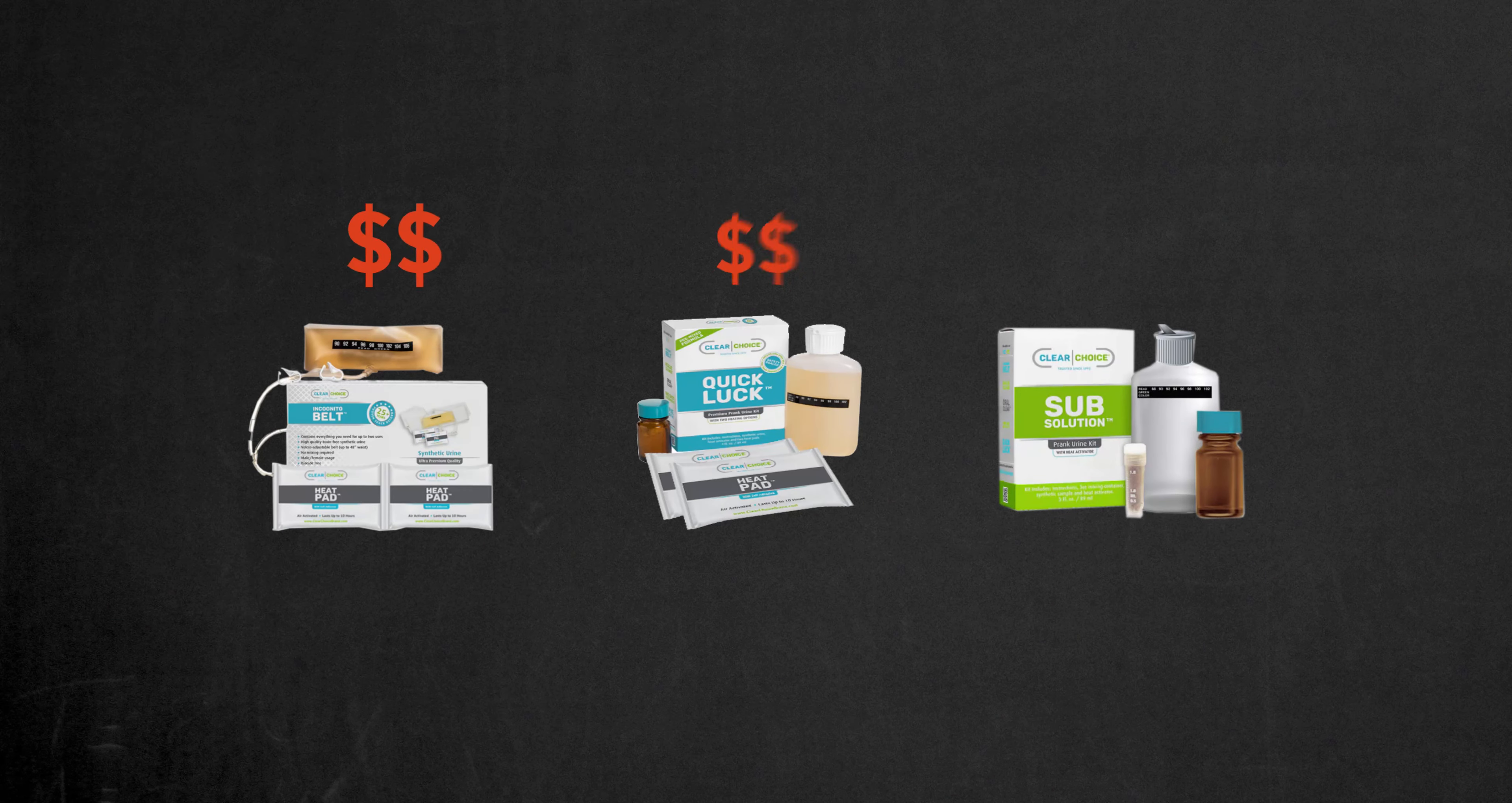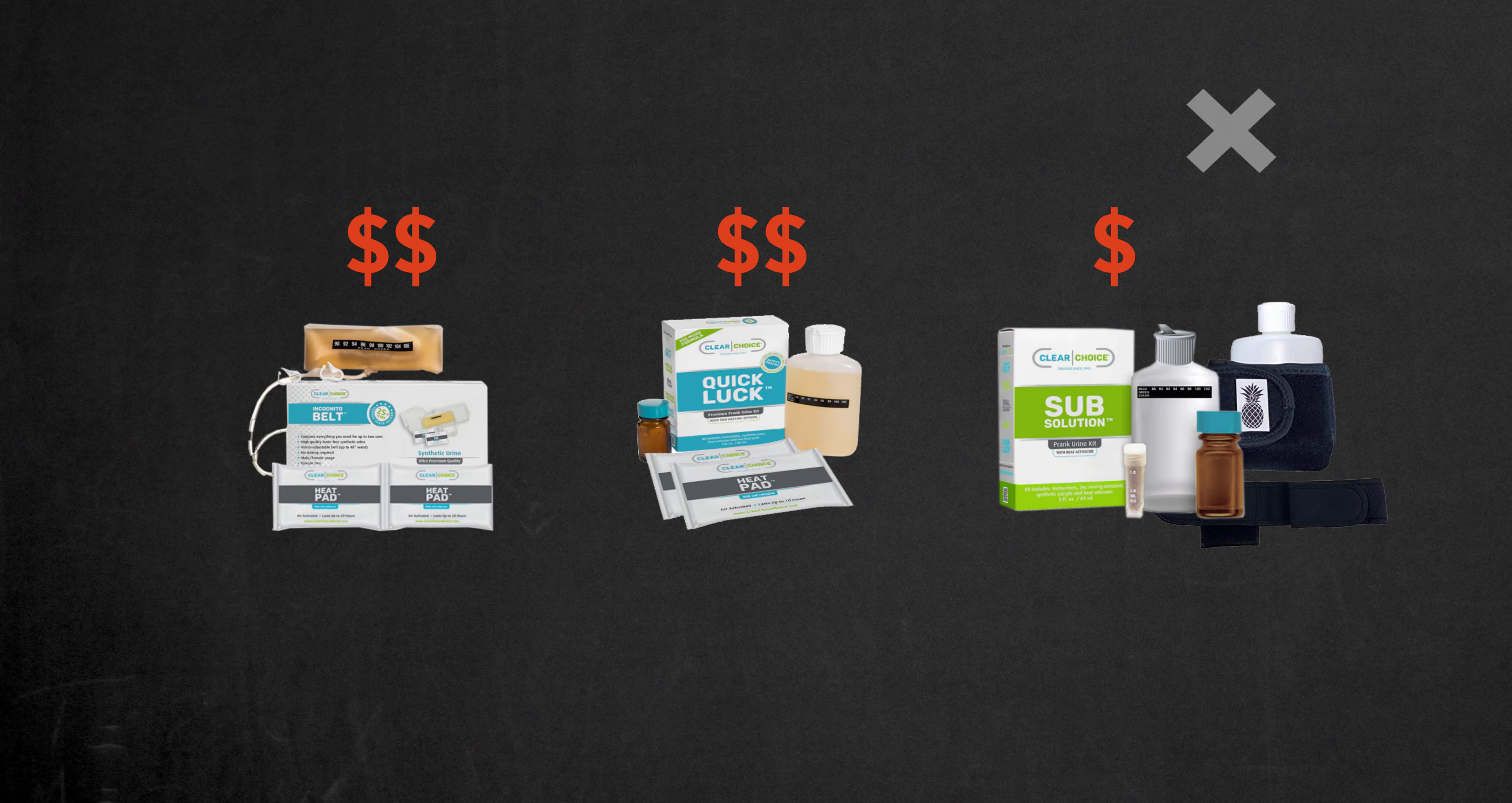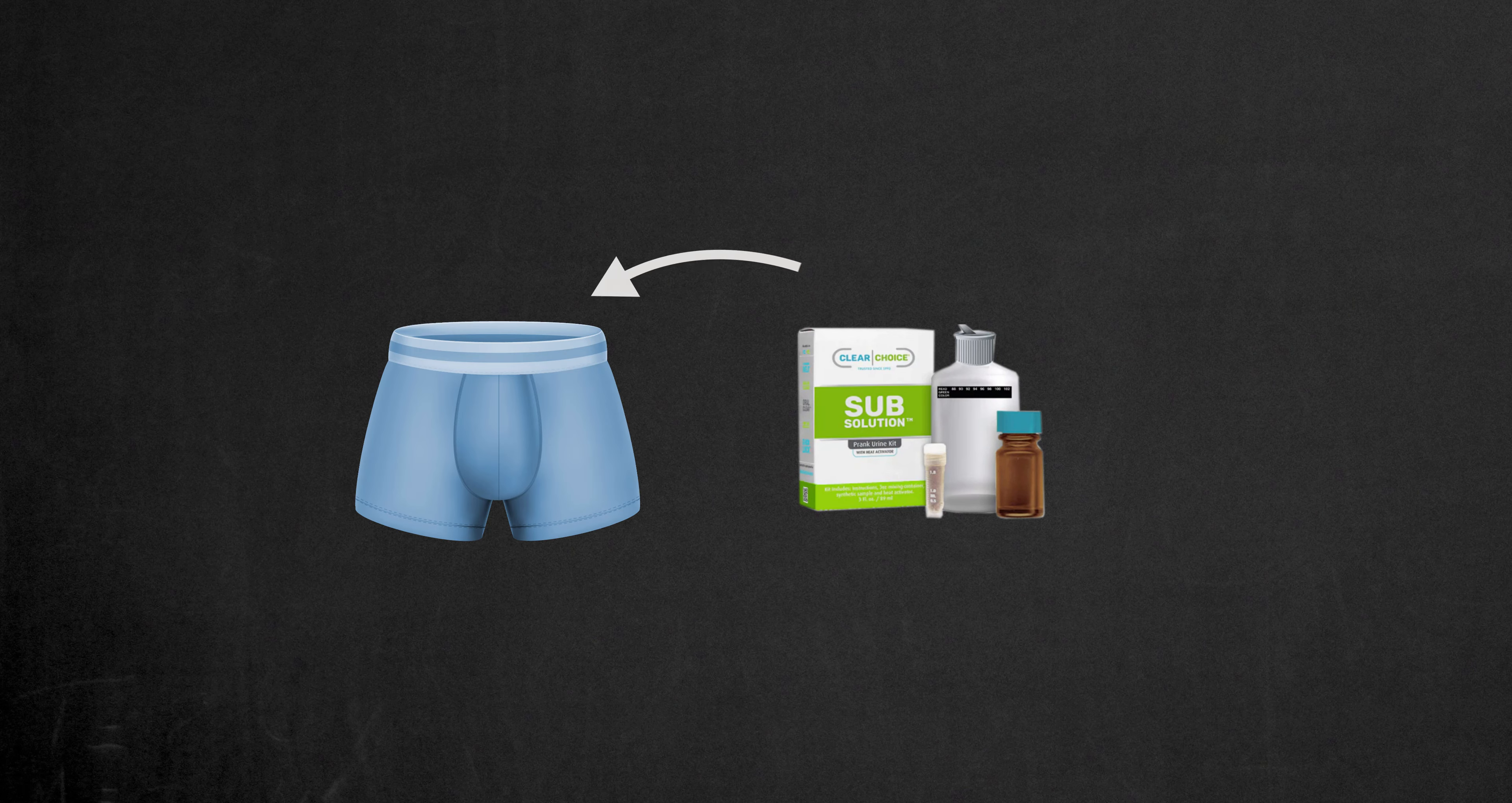While the price tag on this one is lower than the previous two synthetic urine kits, you'll still need something like a Stash Leg Belt for a discreet carry to the test. Or if you're comfortable with it, you could consider stowing it away in your underwear.